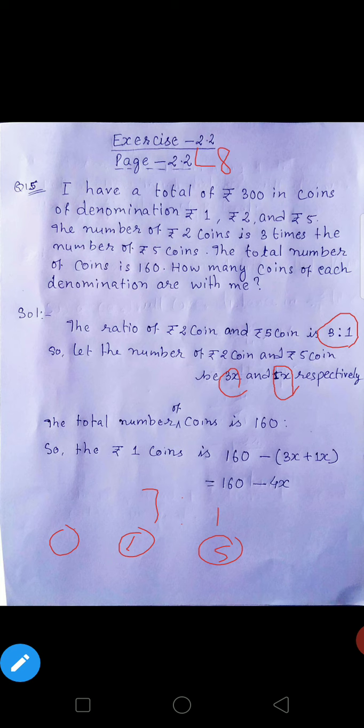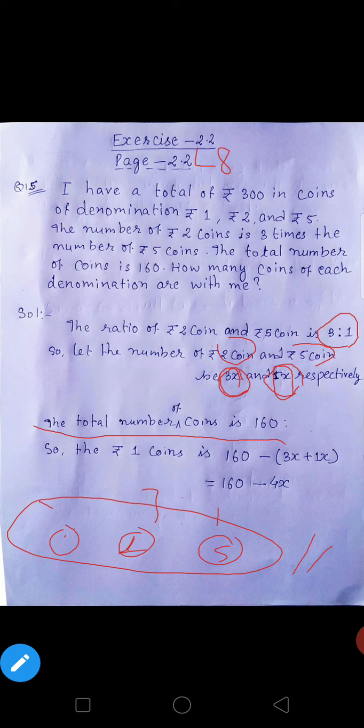3x and 1x. 1x kis ka hai? 5 ka. 3x kis ka hai? 2 ka. 2 coins kya hai? Meaning 5 rupiah coins se 3 guna jyada hai. Number of 2 coins kitna hai? 3x pakar lo. Number of 5 coins kya hai? 1x pakar lo.